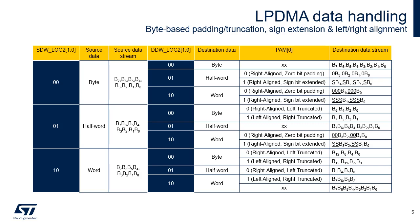If the destination data width is larger than the source data width, the source data can be either right aligned and padded with zeros, or sign extended up to the destination data width. If the destination data width is smaller than the source data width, the source data can be either right aligned and left truncated down to the destination data width, or left aligned and right truncated down to the destination data width.